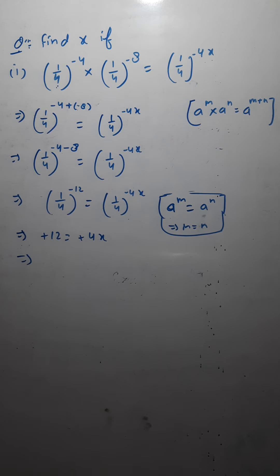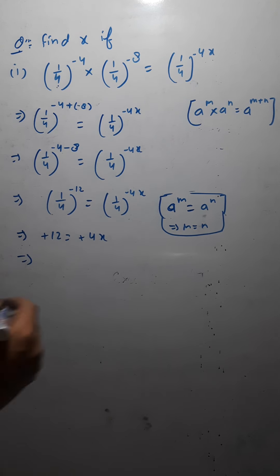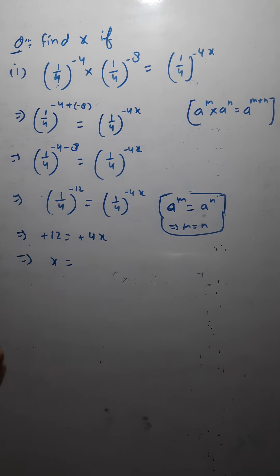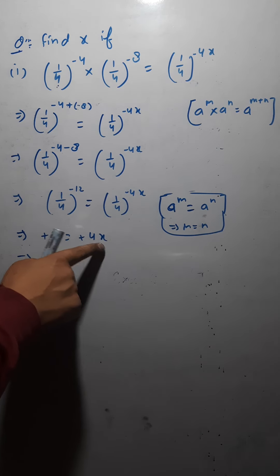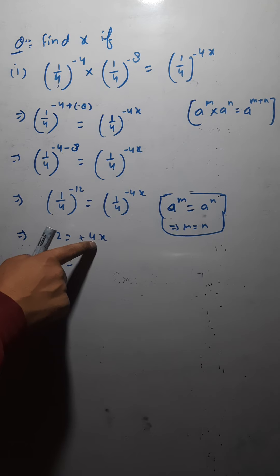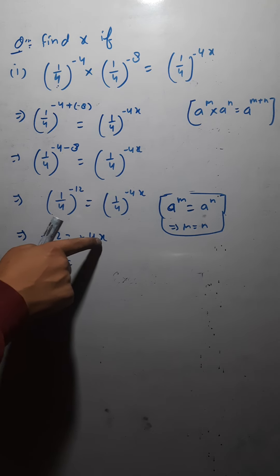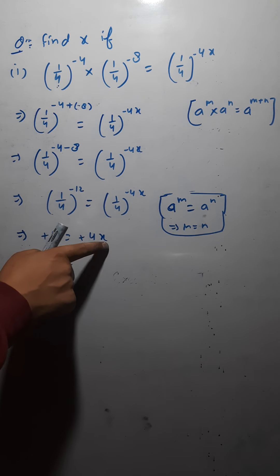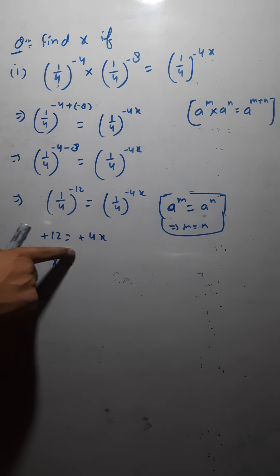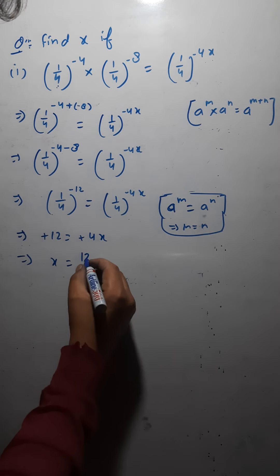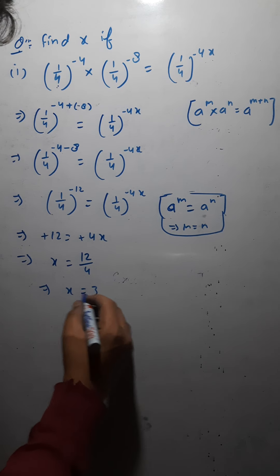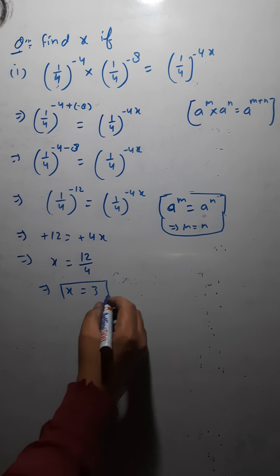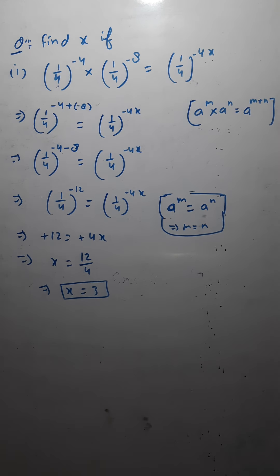So x would be equals to... since 4 is multiplying here, it would divide on the other side. So I write it as 12 divided by 4. This gives the value of x as 3. So the value of x is 3.